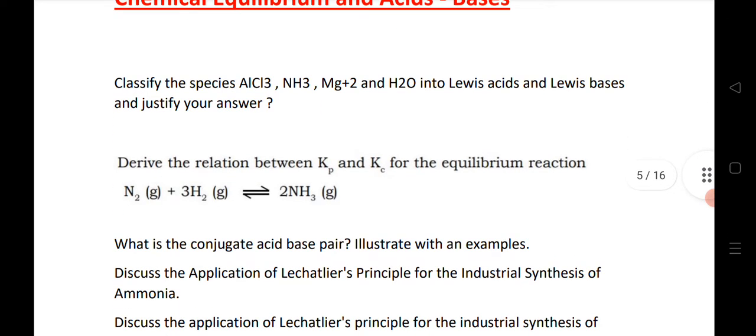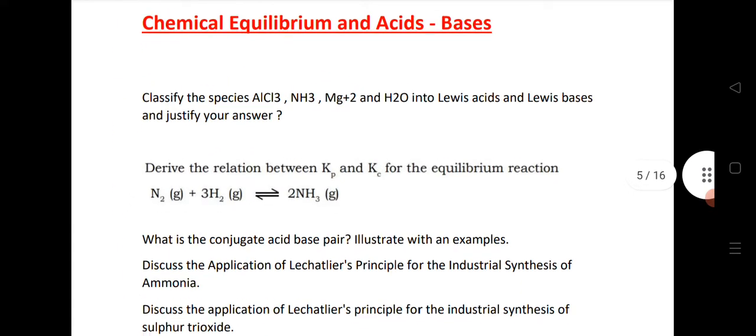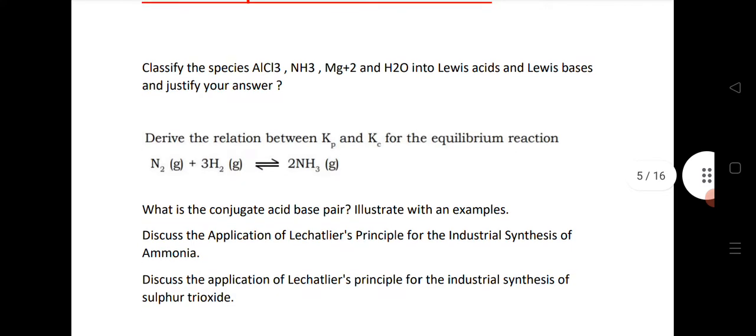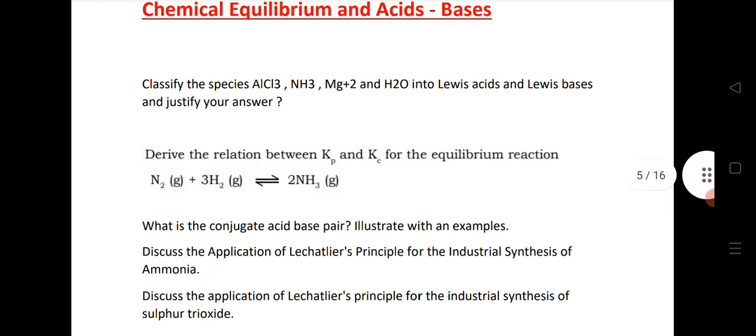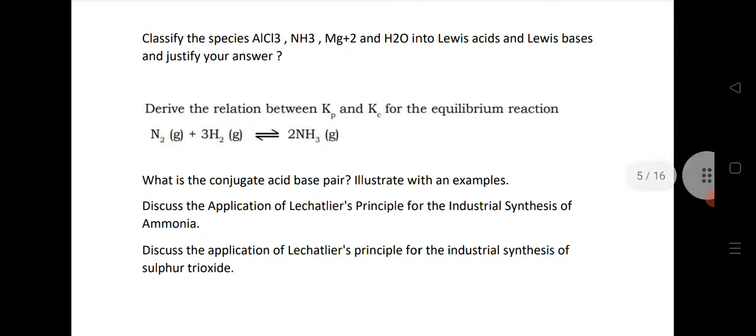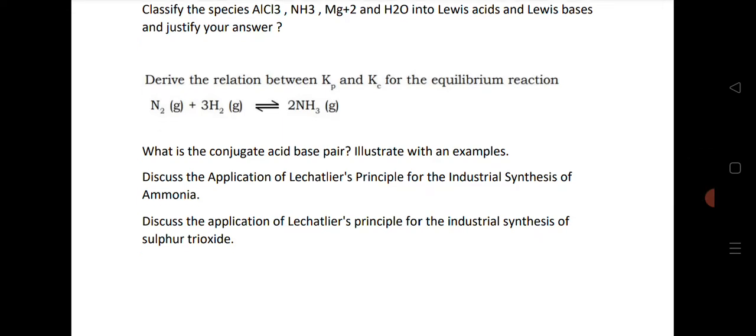Let us see the next chapter chemical equilibrium, acids and bases. AlCl3, NH3, Mg2+ plus H2O into Lewis acid and Lewis base, derive the relation between Kp and Kc for the Haber process reaction that produces ammonia. What is the conjugate base pair, very important question.